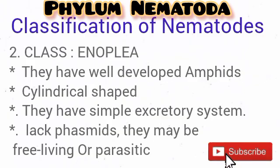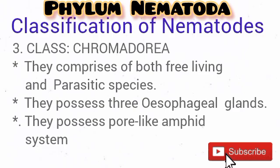This class possesses amphids. Enoplia, another class of the Phylum Nematoda, also possesses amphids but lacks phasmids. They comprise both parasitic and free-living species. We also have the class Chromodora, which comprises both free-living and parasitic species. Note that Chromodora also possesses amphids.